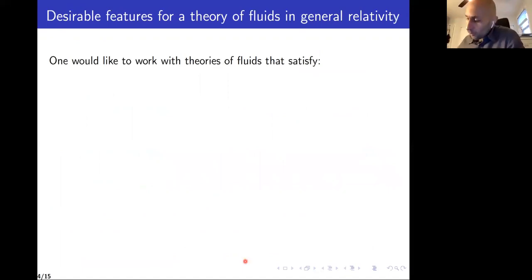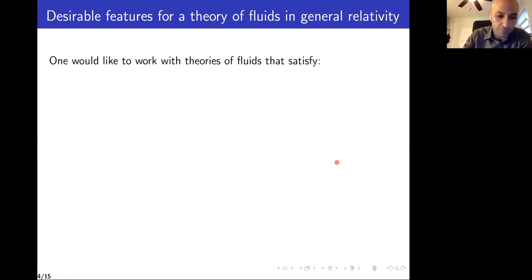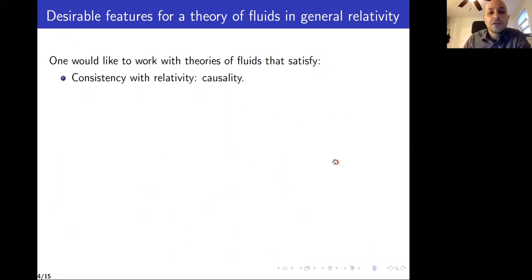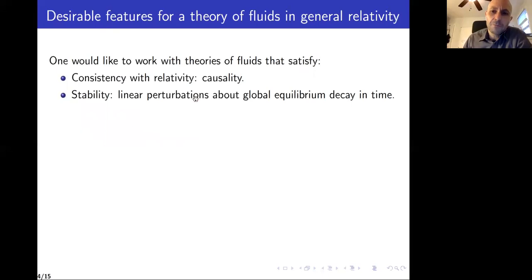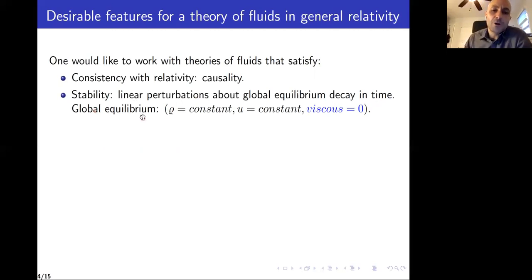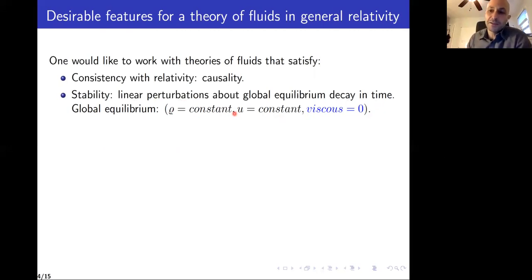When you are defining your theory, there are some properties you'd like to have. First, these are relativistic theories, so you want consistency with relativity and causal evolution. You want some form of stability — since we have dissipative effects, we require that linear perturbations about global equilibrium decay in time or at least do not grow. For simplicity, global equilibrium means states where density and velocity are constant and the viscous fluxes vanish.